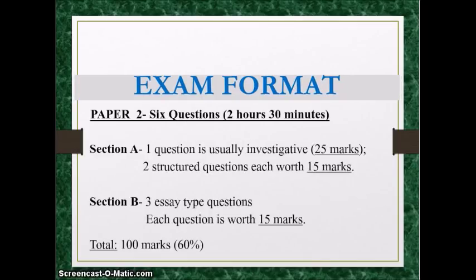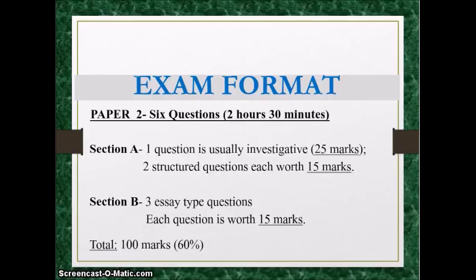Paper Two consists of six questions for two hours and 30 minutes. Section A usually has an investigative question related to a graph, table, chart, or experiment — question one is the longest with the most marks. Questions two and three in Section A are structured questions worth 15 marks each. Section B has three longer essay-type questions, each worth 15 marks, giving a total of 100 marks. Paper Two is worth 60% of your overall grade.